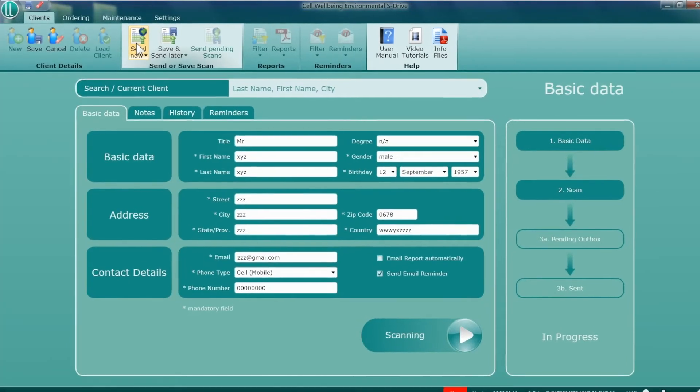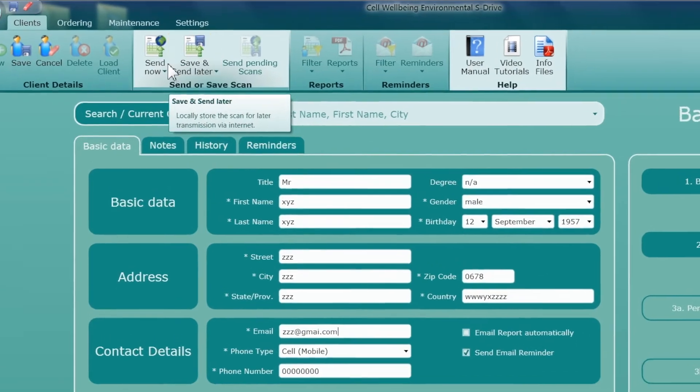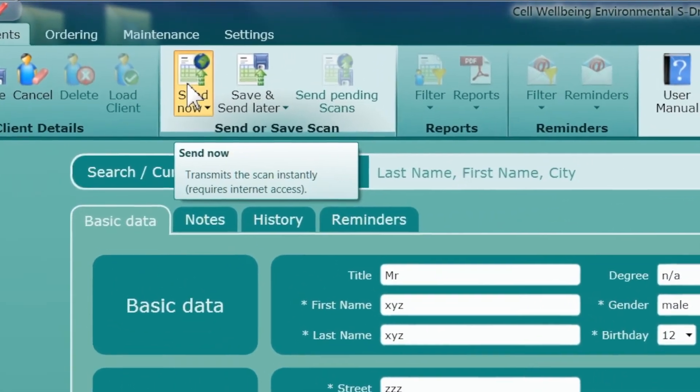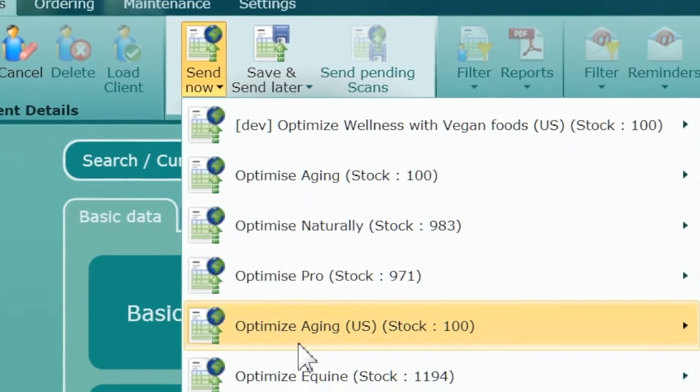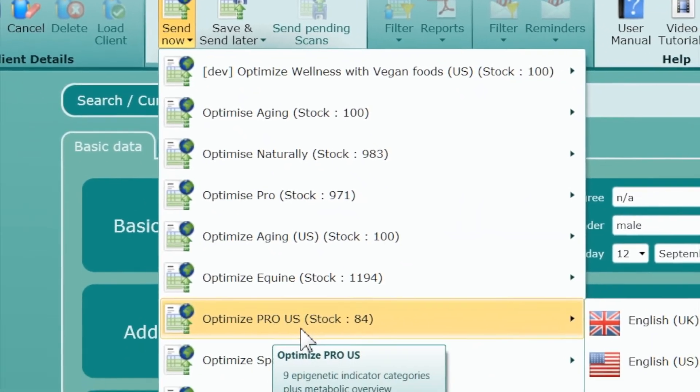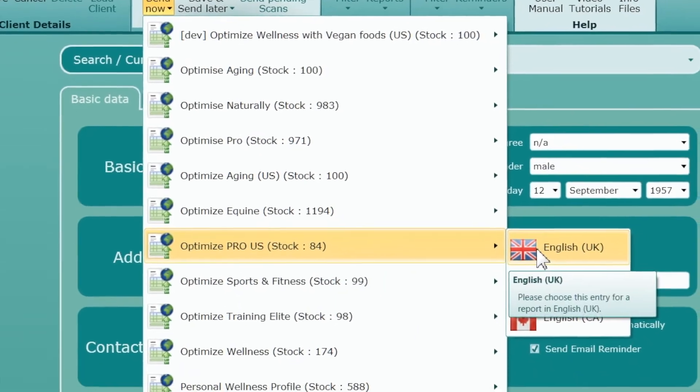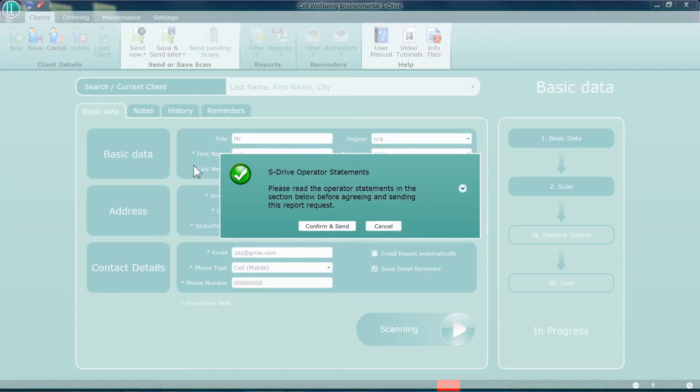Next, if you have a good internet connection, click on the Send Now tab, or if there is a poor connection, click on the Send Later tab. Next, select the report type and the preferred language. Click the Send button, and if you agree to the conditions, click Send again.